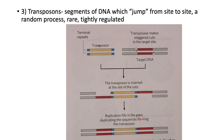In transposons, segments of DNA jump from site to site. This is a rare process and tightly regulated. Transposons have terminal repeats. The transposase makes staggered cuts in the target site. The transposon is inserted at the site of the cuts, and then gaps are filled in with replication. You can get DNA positioned and placed into a target using this, filling in the gaps. This is how you can introduce genetic material.